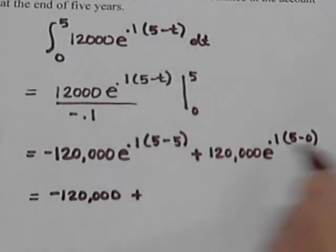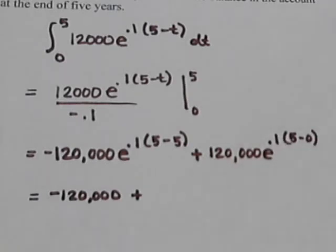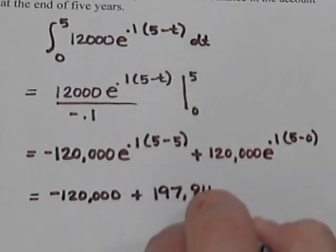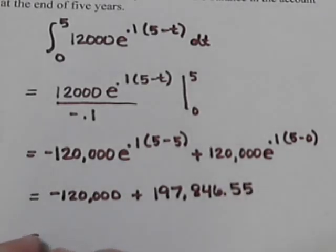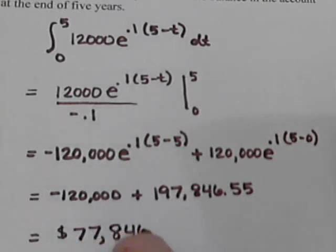Plus: five minus zero is five, times 0.1 is 0.5. So we put one hundred twenty thousand times e to the 0.5 into our calculator and we get one hundred ninety-seven thousand eight hundred forty-six dollars and fifty-five cents. Combining the two terms together, we end up with a balance at the end of the five years of seventy-seven thousand eight hundred forty-six dollars and fifty-five cents.